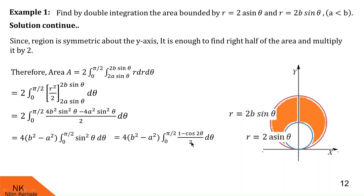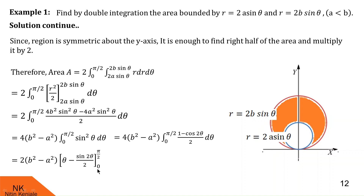We use the identity cos 2θ = 1 − 2 sin²θ to write sin²θ = (1 − cos 2θ)/2. Integrating (1 − cos 2θ)/2 with respect to θ, integration of 1 is θ and integration of cos 2θ is sin 2θ/2. Substituting the limits 0 to π/2: the upper limit gives π/2 − sin(π)/2 = π/2, and the lower limit gives 0. The final value of the integral is (b² − a²)π. So this is the area of the region bounded by the two circles.